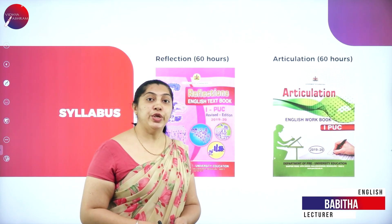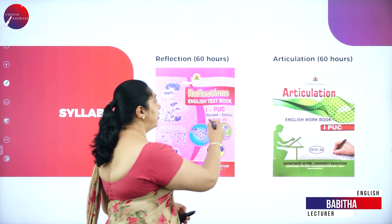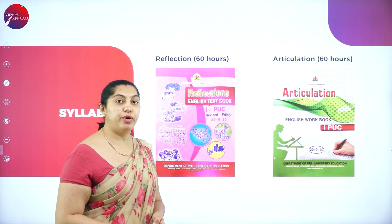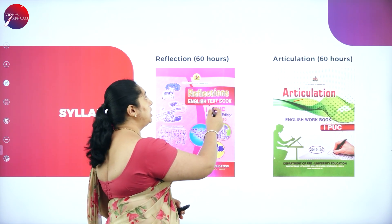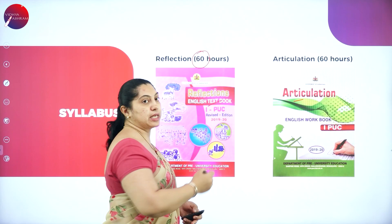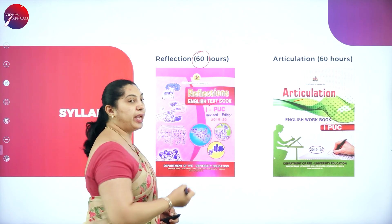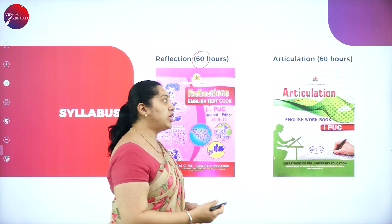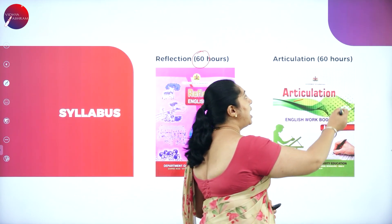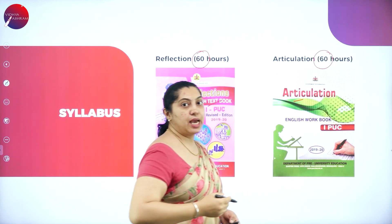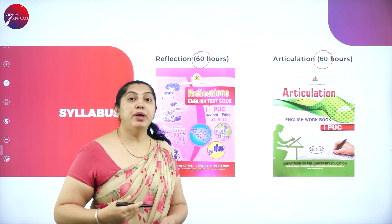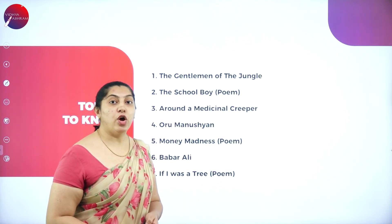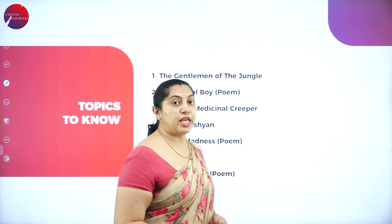For your First PUC, you'll have two textbooks — Reflection and Articulation. For Reflection, the number of hours prescribed by the board is 60 hours. It is the main literature textbook. Articulation is the grammar textbook, also with 60 prescribed hours. Put together, the total number of hours prescribed is 120 hours.